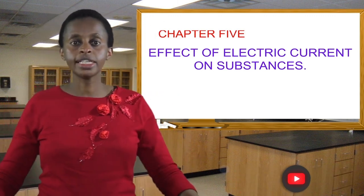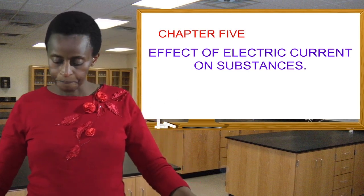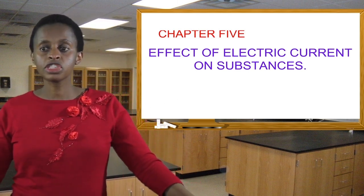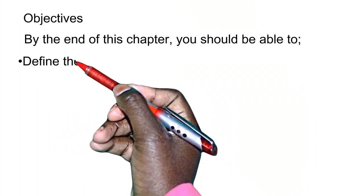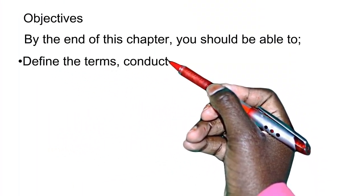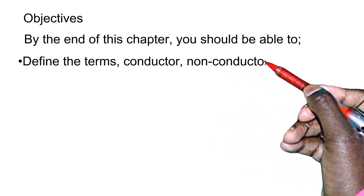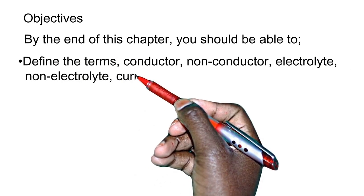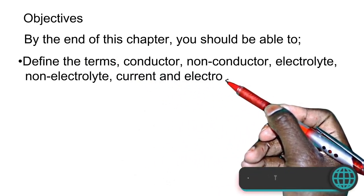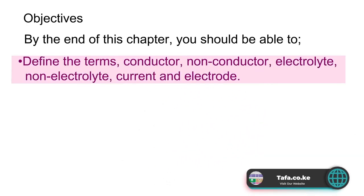So by the end of this chapter, you should have been able to: one, define the terms conductor, non-conductor, electrolyte, non-electrolyte, current, and electrode.